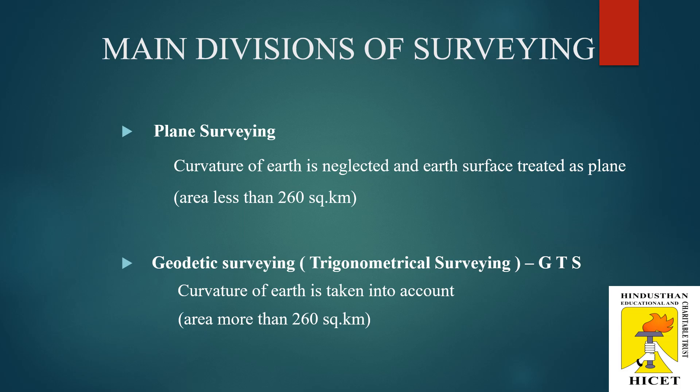Surveying may be divided into two main classes. First one is plane survey; second one is geodetic survey. Since the shape of the earth is spherical, the line connecting any two points on the earth's surface is not a straight line — it is a curve. When a survey extends over a large area, or when high accuracy is needed, the curvature of the earth must also be taken into account. For small distances, the difference between the arc length and the straight length is very small, so we can neglect that.